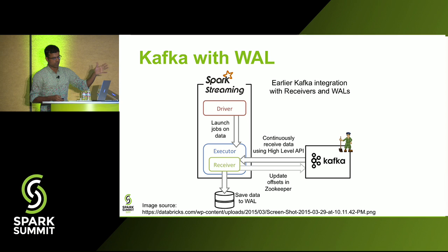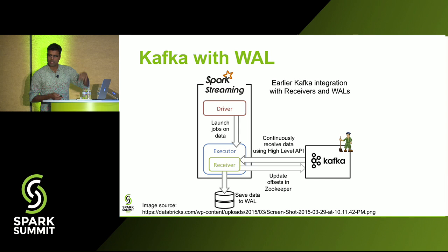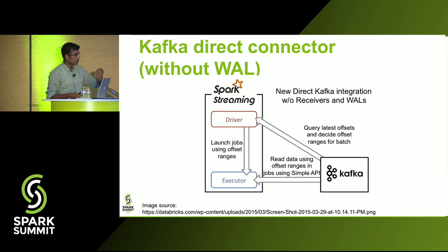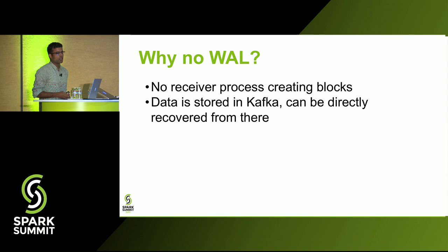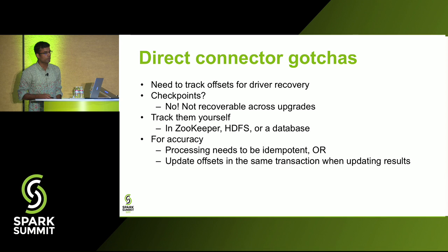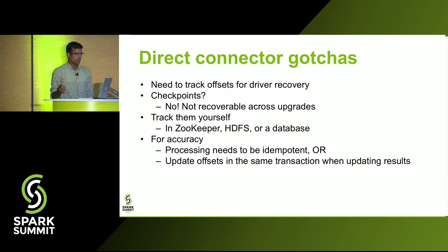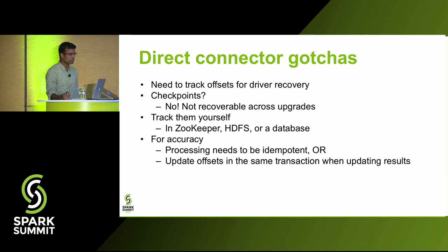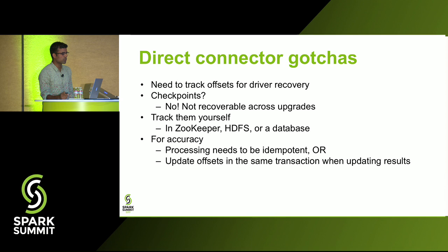In the receiver-based architecture, the driver sends information asking executors to launch jobs; a subset of executors runs the receiver, which uses the Kafka high-level API to read data and store it in the write-ahead log. With the direct connector, the driver sends executors offset ranges, and each executor reads data directly from Kafka topic partitions. If there's a failure, the offset is replayed to a new executor.